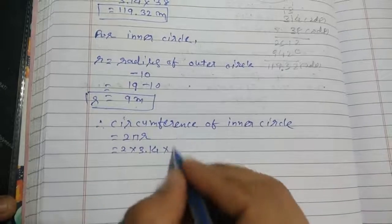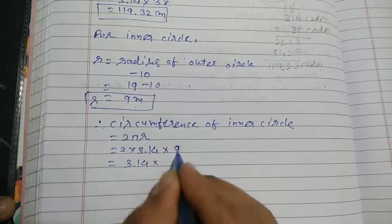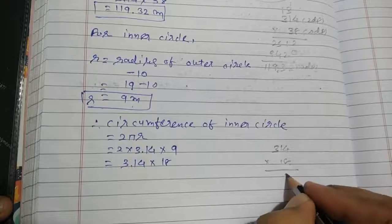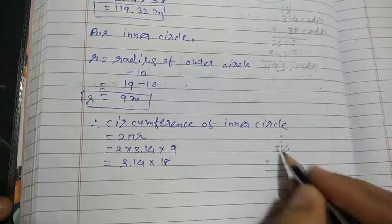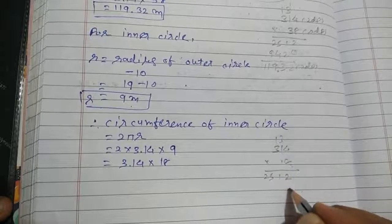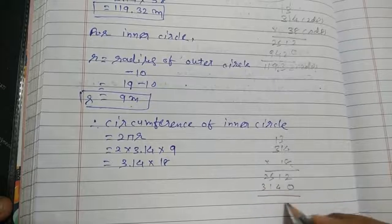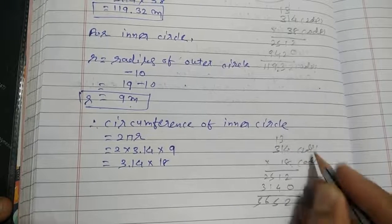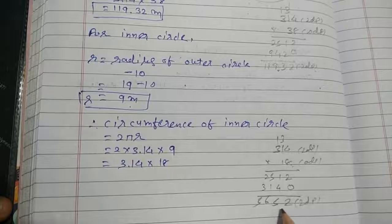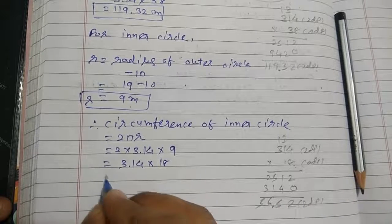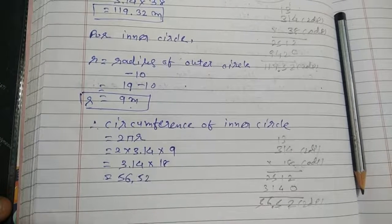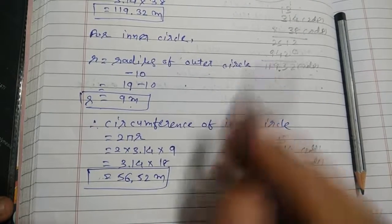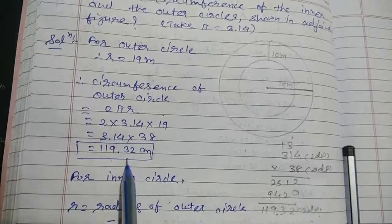Circumference of inner circle = 2 × 3.14 × 9. We compute 314 × 18: 4×8=32, carry 3; 1×8=8+3=11, carry 1; 3×8=24+1=25; then 314×1 gives 314. Adding gives 5652. With 2 decimal places, the answer is 56.52 meters. So the circumference of the inner circle is 56.52 meters and of the outer circle is 119.32 meters.